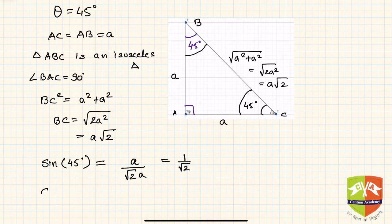Now cosine of 45: cosine of 45 is adjacent by hypotenuse, so a upon a√2, which is again 1/√2.